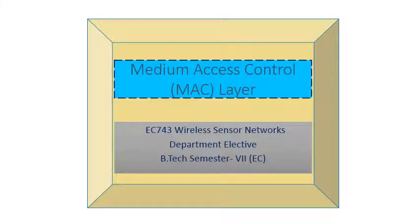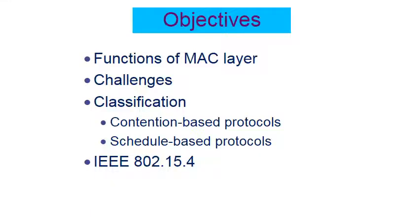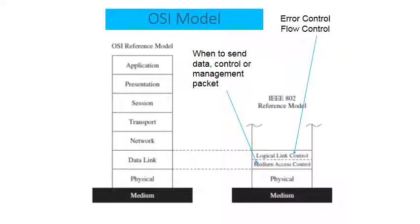We are going to start a new chapter on medium access control layer protocols for the wireless sensor network. In this chapter, we will first discuss the functions of the MAC layer in general, then the challenges in designing the MAC layer protocol particularly for wireless sensor networks. We will then focus on two categories of protocols: contention-based protocols and schedule-based protocols. At the end, we will consider the case study of IEEE 802.15.4 with reference to the wireless sensor network.